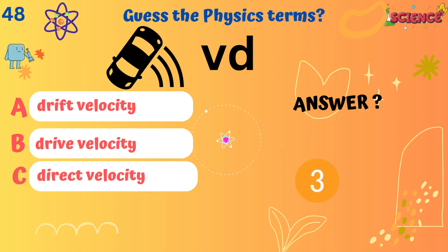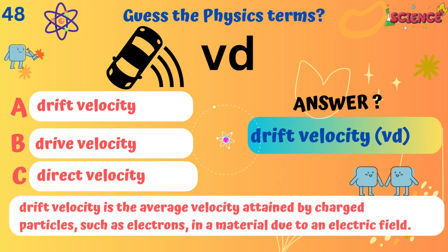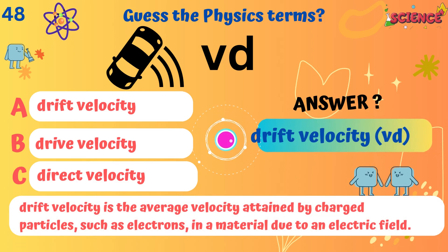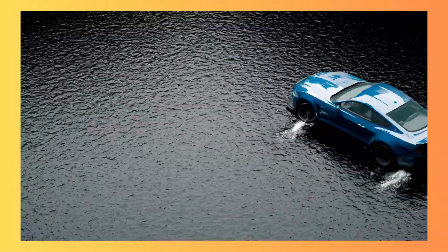Drift velocity. It is the average velocity attained by charged particles such as electrons in a material due to an electric field.